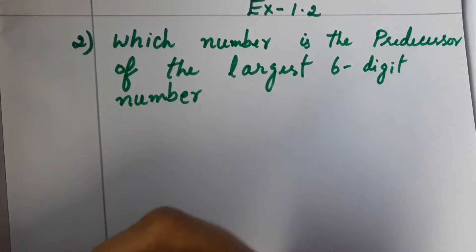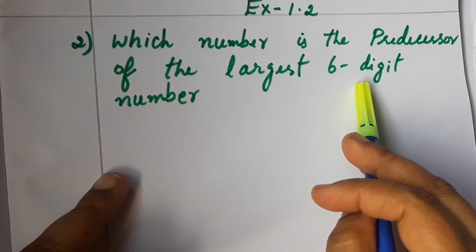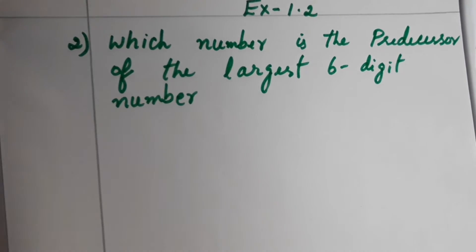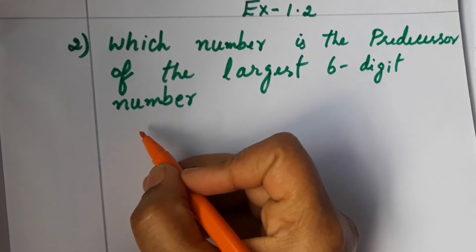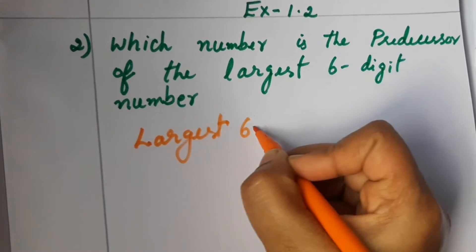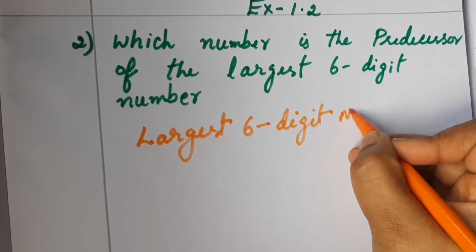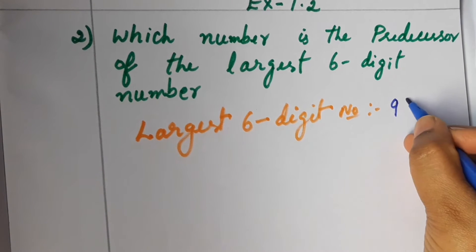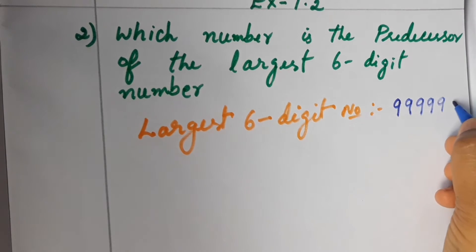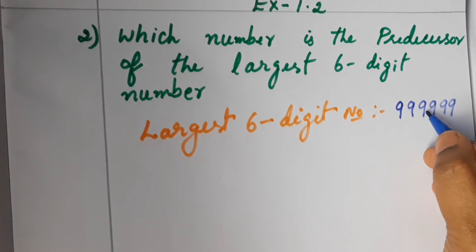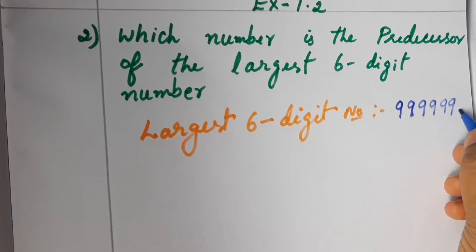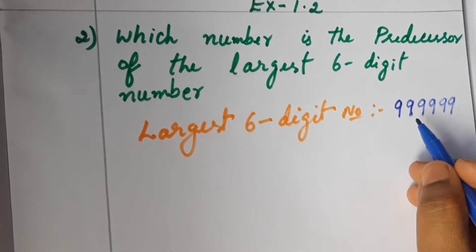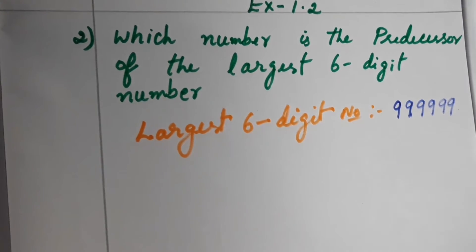Exercise 1.2, second question: which number is the predecessor of the largest six-digit number? First we have to write the largest six-digit number. Largest six-digit number — how many times nine do we have to write? Six times: one, two, three, four, five, six. So this is the largest six-digit number: 9,99,999. Now, which number is the predecessor?